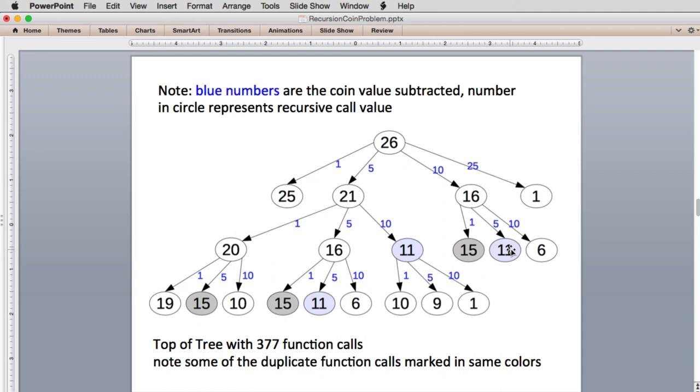So it turns out this happens a lot in solving problems. You have a recursive function and it ends up being called with the same number in a lot of different possibilities of trying to find the total solution. So what we're going to use is a special technique that can take advantage of this. And by the way, these grays show another duplicate - getting called with the number 15 happens quite a bit.